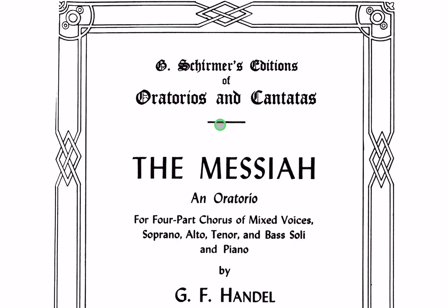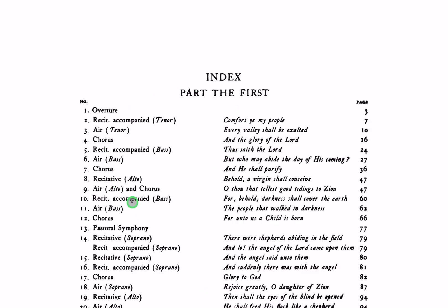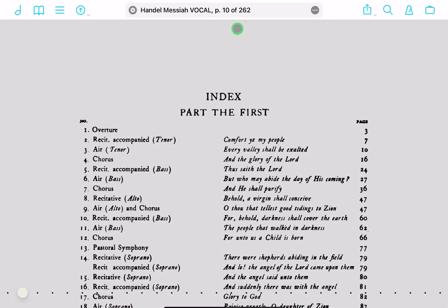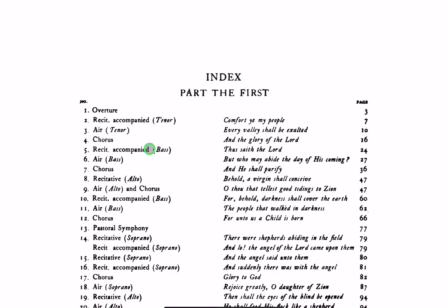Today I'd like to show you how to create bookmarks within Fourscore, and what better piece to use than Handel's Messiah, since so many of you are performing this. There are so many different movements and sections in a great piece like this, and the score has over 260 pages in it. Sometimes you just really want to be able to find exactly what you're looking for with the touch of a button, and bookmarks are the answer.